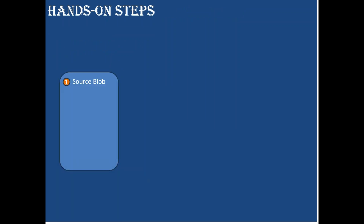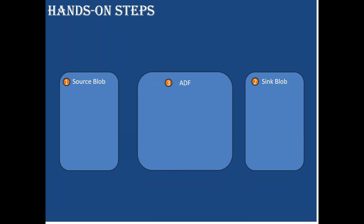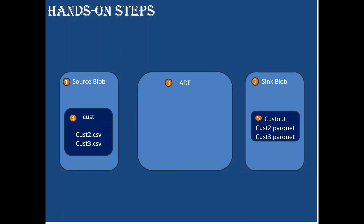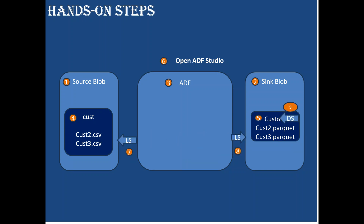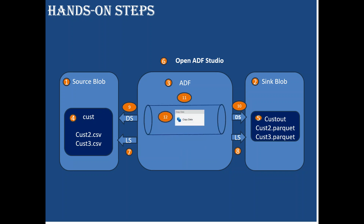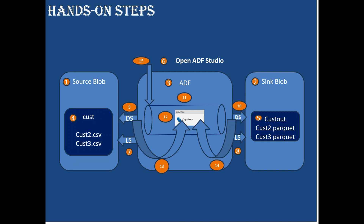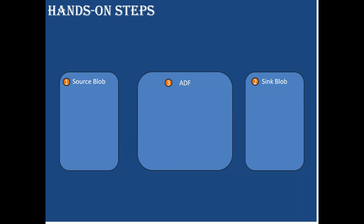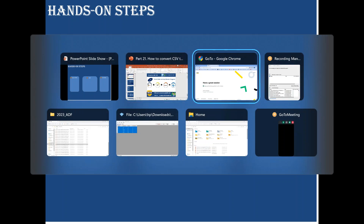Looking at the hands-on steps, we need to create three resources: source blob, sink blob, and ADF. Then inside the source blob, we create a container called 'cust' and upload the CSV file. On the sink side, once we run the pipeline, this is how the output looks. In step six, we open ADF and create two linked services and two datasets. Then we create a pipeline using copy activity with the source and sink datasets, and finally run the pipeline.